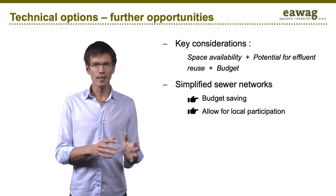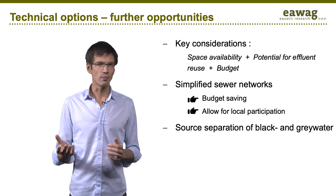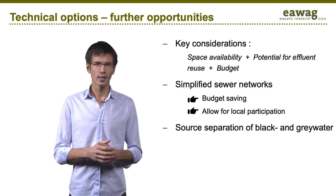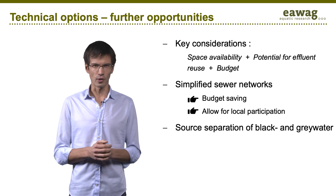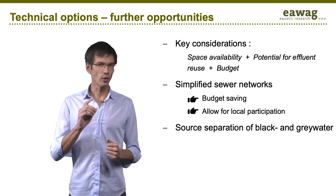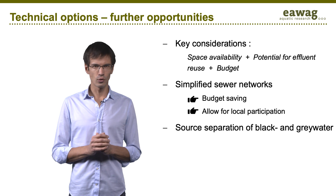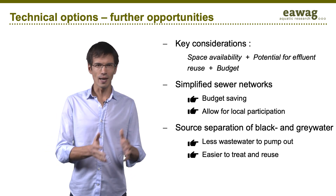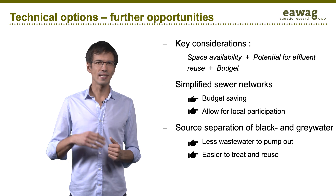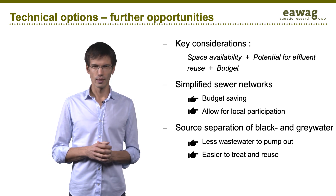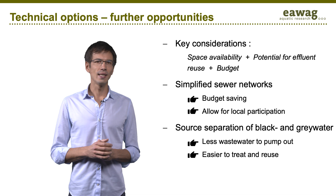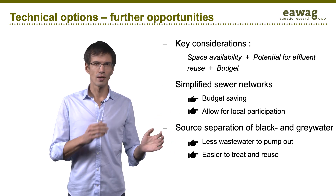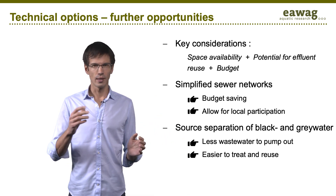In individual buildings, you may consider separating black and grey water, especially where wastewater is stored in order to be collected by vacuum trucks. Treating grey water only is much easier to meet reuse standards, and the volume of wastewater to be pumped out of the building is then significantly reduced. This example shows the link between decentralized treatment, fecal sludge management, and water reuse.